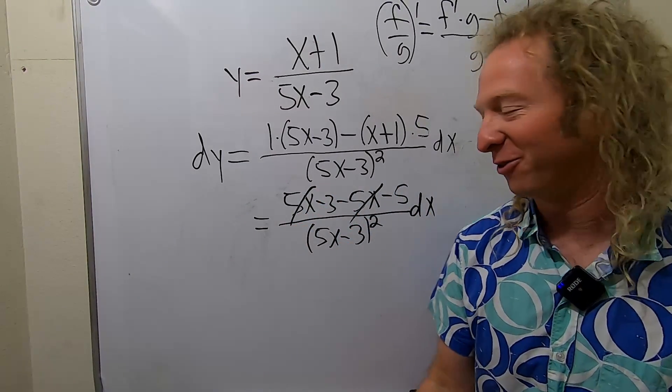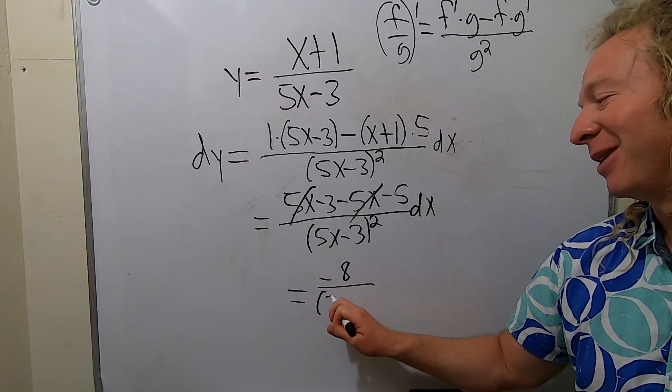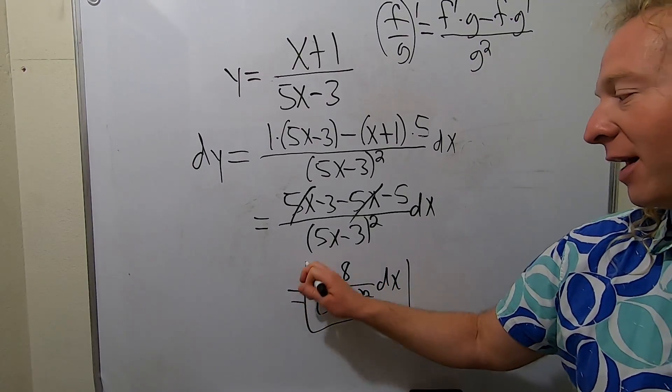Boom, boom, beautiful. So this is equal to negative 8 over 5x minus 3 quantity squared dx. That's how pros do it without messing up.